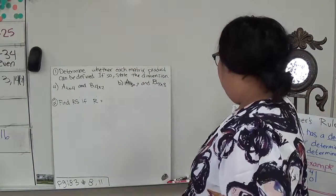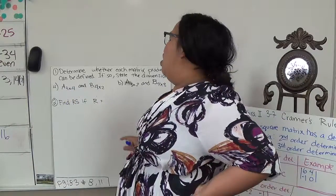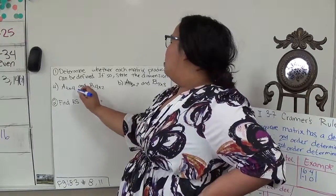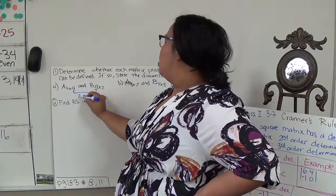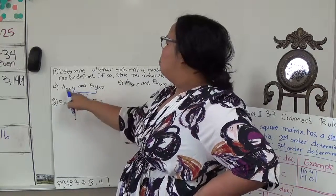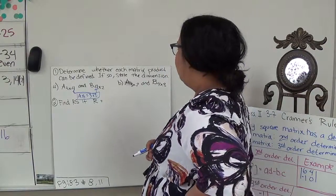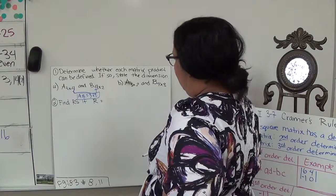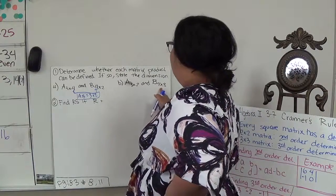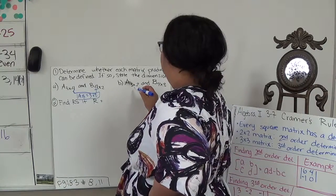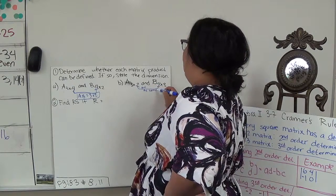This next question just wants us to determine whether or not the matrices could be multiplied. The first matrix is a 3 by 4 and the second matrix is a 4 by 2. Because the inner values are the same, it can be multiplied, and the new dimension of AB would be the outside numbers: 3 by 2. Then AB is 3 by 2 and the next is 4 by 3 — these inner values are not the same, so I cannot multiply.